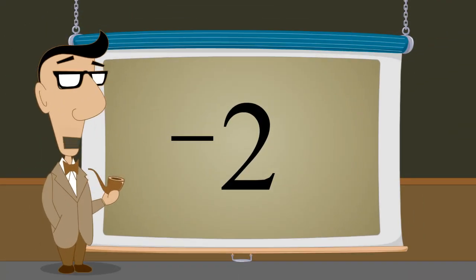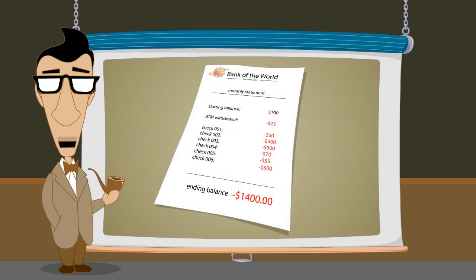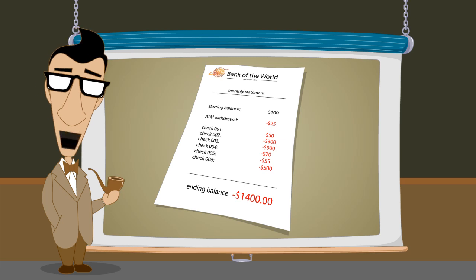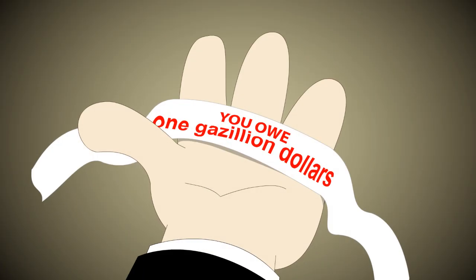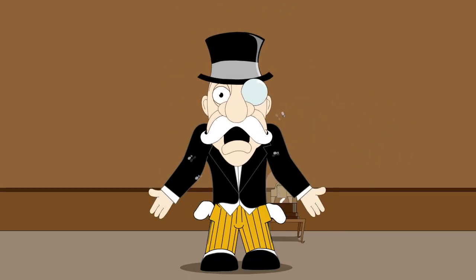However, the idea that negative numbers don't actually represent anything in the real world is debatable as anyone who has ever overdrawn their bank account can tell you. Someone who owes more money than they have could be thought of as having less than zero money or having a negative net worth.